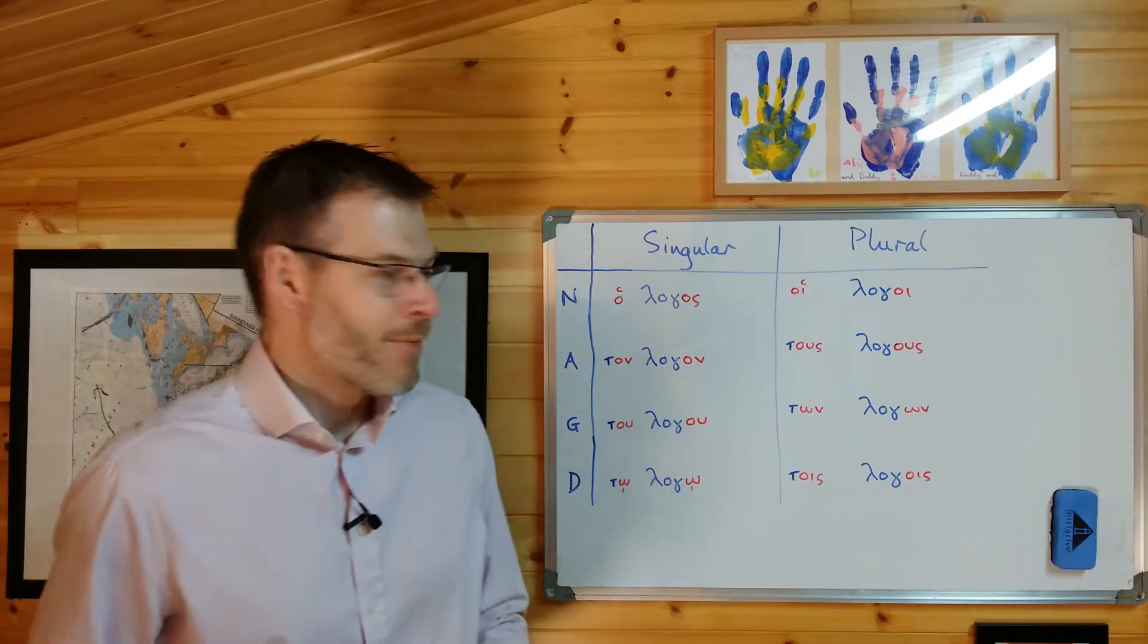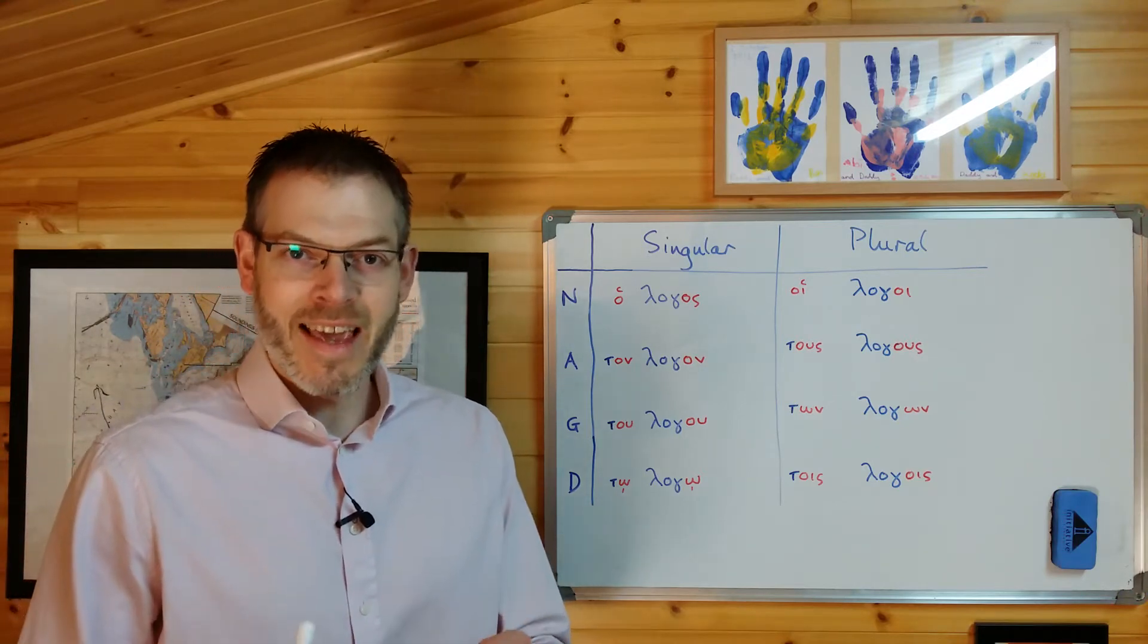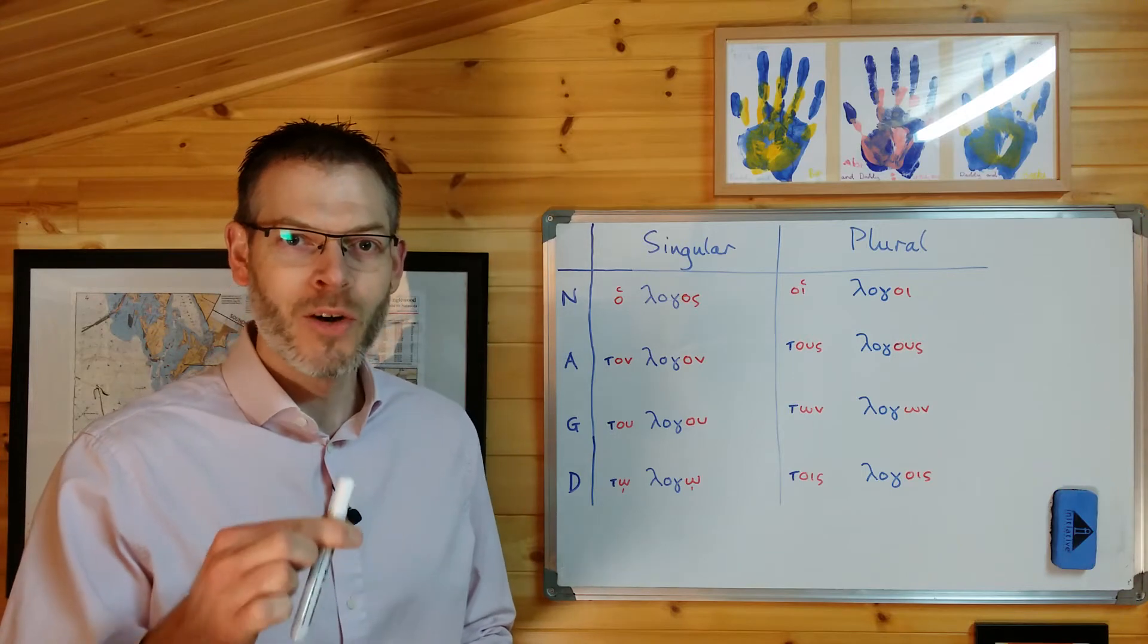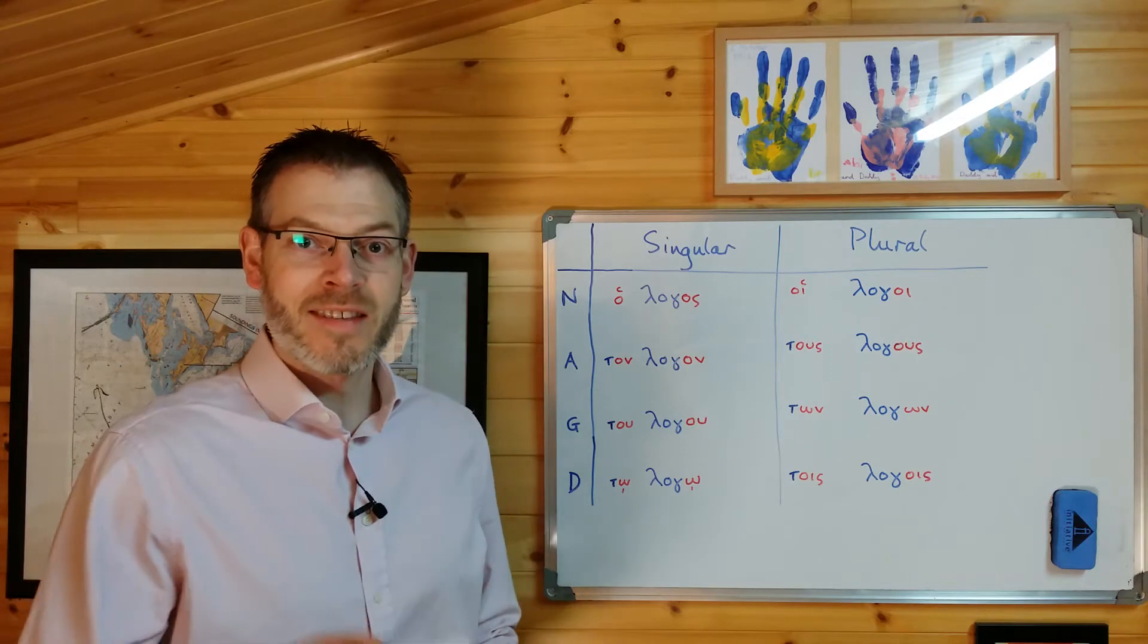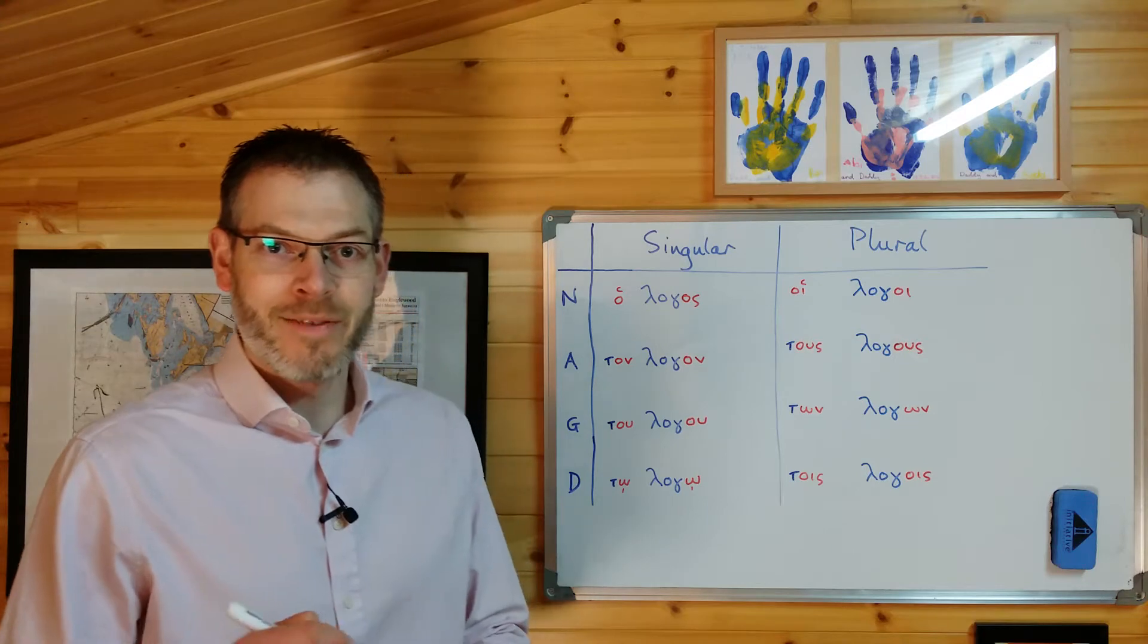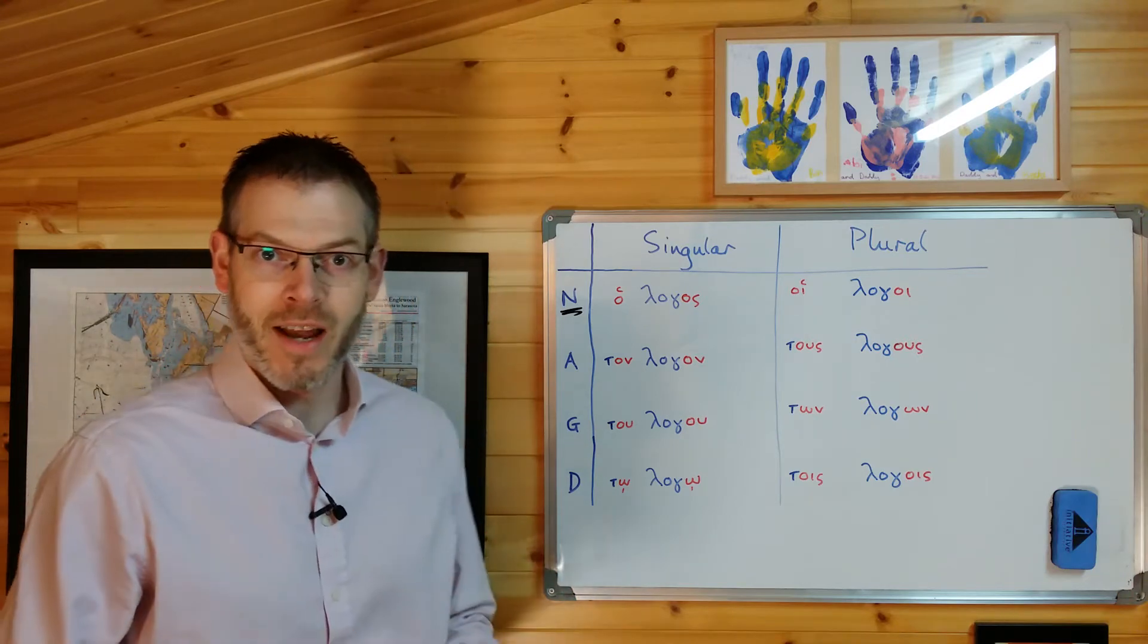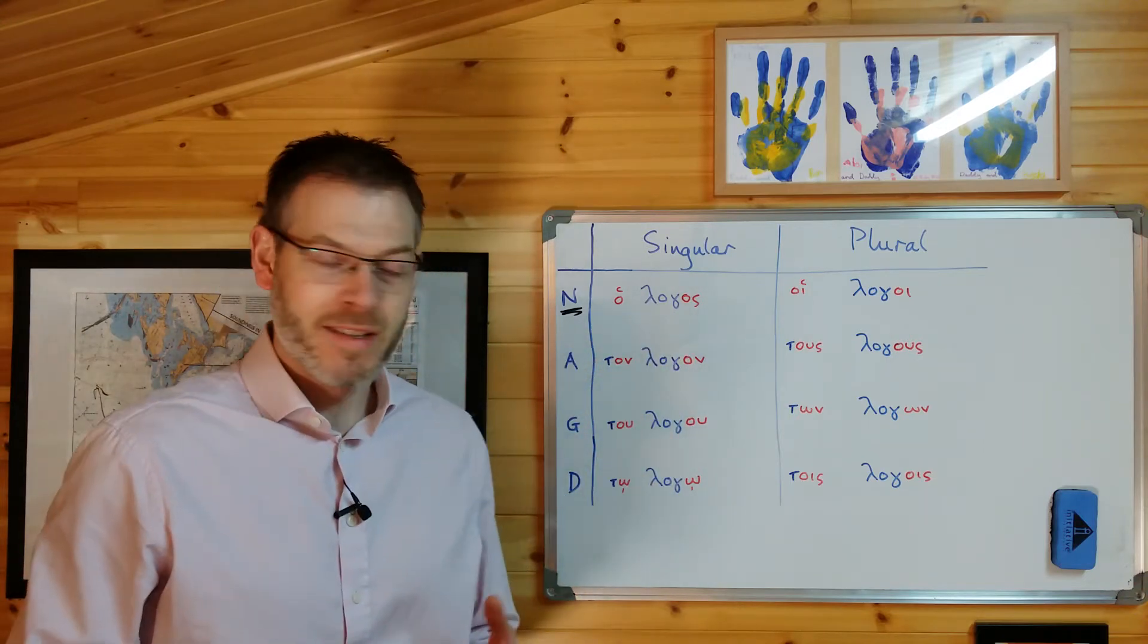Let's just recall what we know already about cases. Remember, a case is like a little label that's attached to a noun or a pronoun or an article which tells you what that word is doing in the sentence. If it's the subject of a verb in the sentence, it'll have the case label nominative attached to it. So if you want to make something like the word the subject of a sentence, ho logos is in the nominative case.